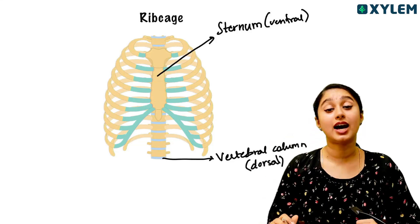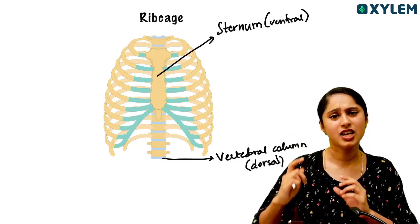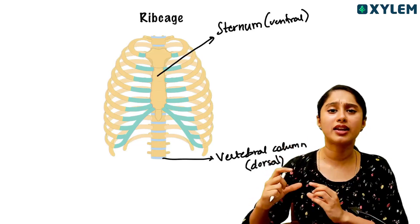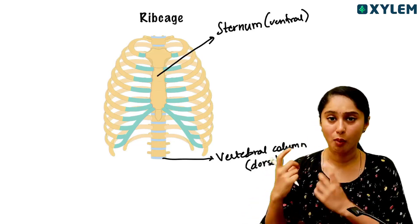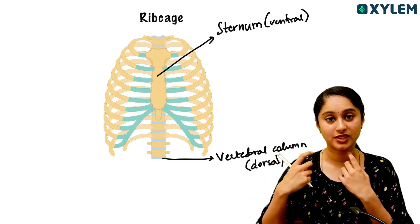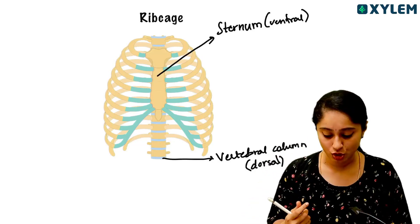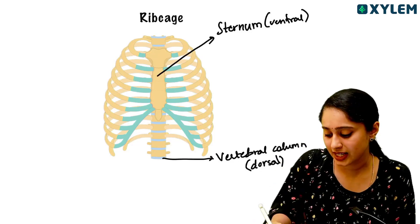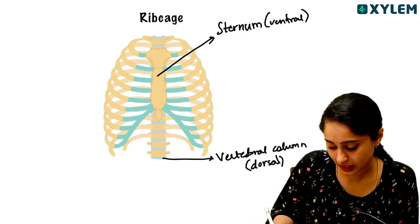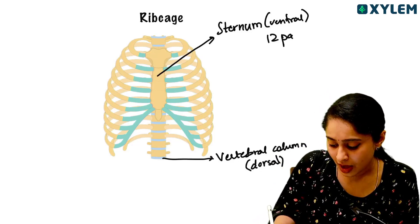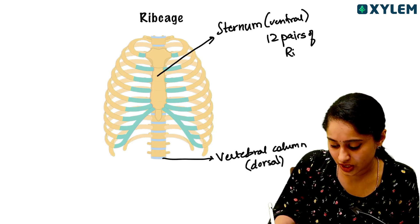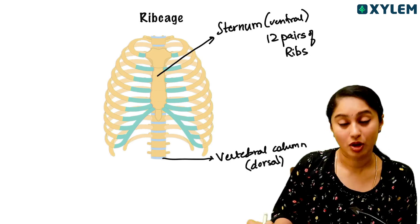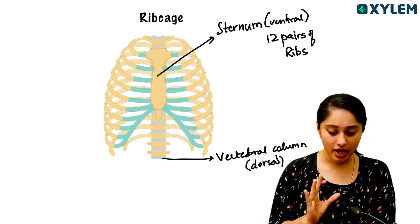Ribs are a small set of bones — that is what we call ribs. So how many ribs are there in our body? There are a total of twelve pairs of ribs in our body.